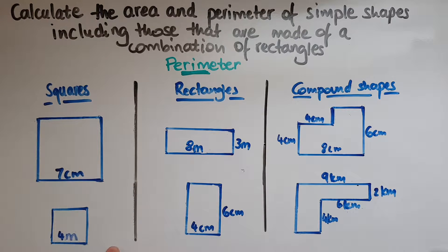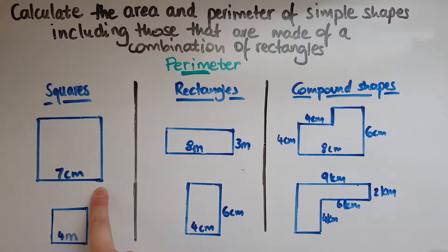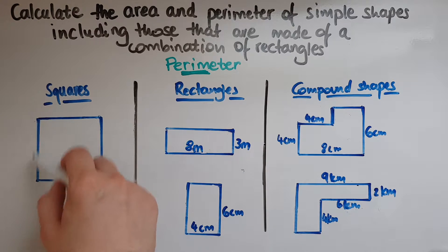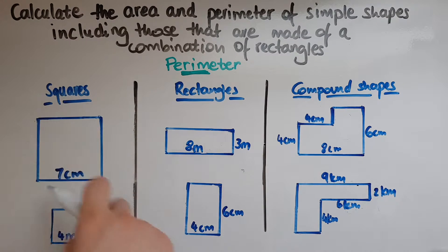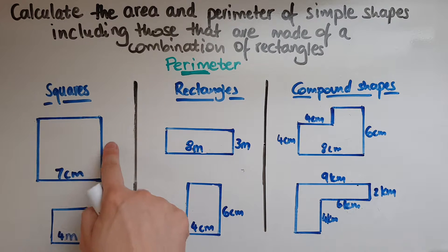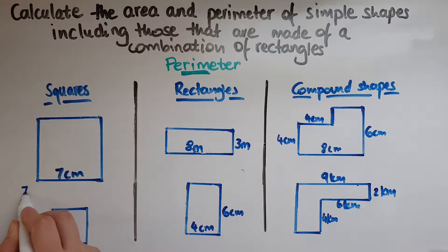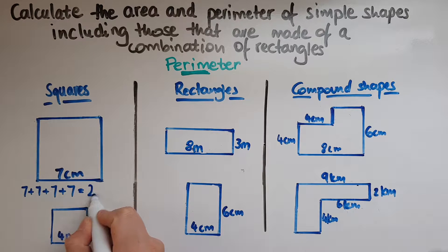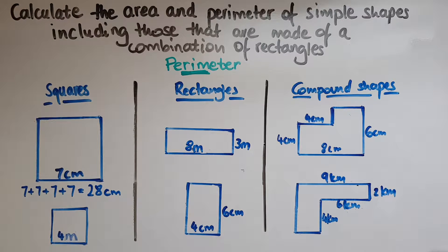So we've got two squares here. This length is seven centimetres, so all the other sides must be seven centimetres as well, because it's a square and all sides are equal. So we've got seven, seven, seven, and seven. Adding seven plus seven plus seven plus seven — that's four lots of seven which is 28. The unit is centimetres, so the answer is 28 centimetres.